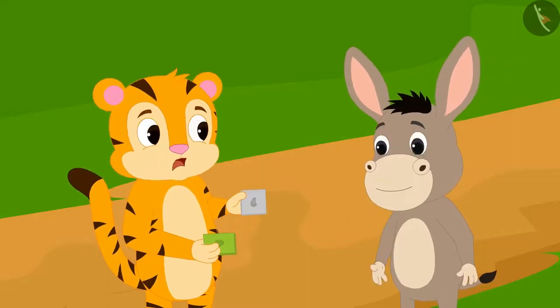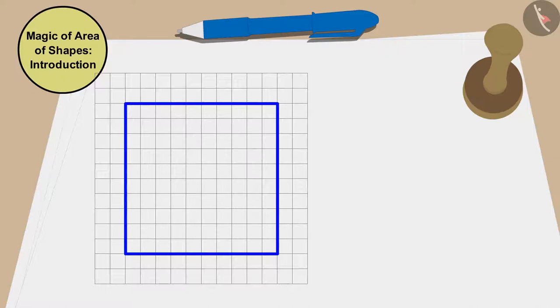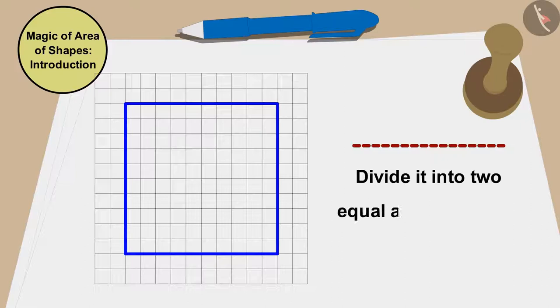Sher Khan was shocked. Children, can you divide the shape of this cashew barfi by just drawing a straight line and somehow divide it into two equal area triangles? You can find a solution by stopping the video.